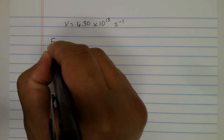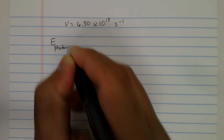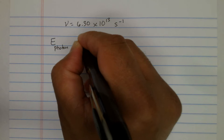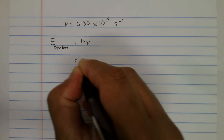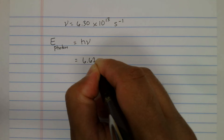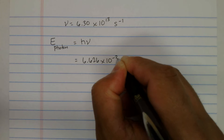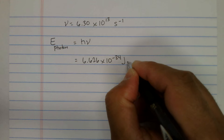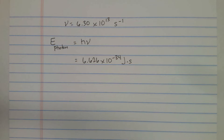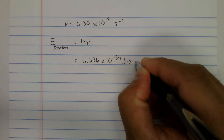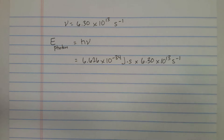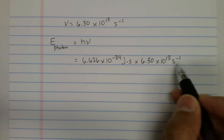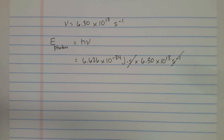We're going to use the Planck equation — sometimes labeled with the subscript 'photon' — which states that energy equals Planck's constant times the frequency. Planck's constant is 6.626 times 10 raised to the minus 34 joule-seconds, and we'll plug in our frequency. Notice how seconds times inverse seconds cancel, leaving us with units of joules.